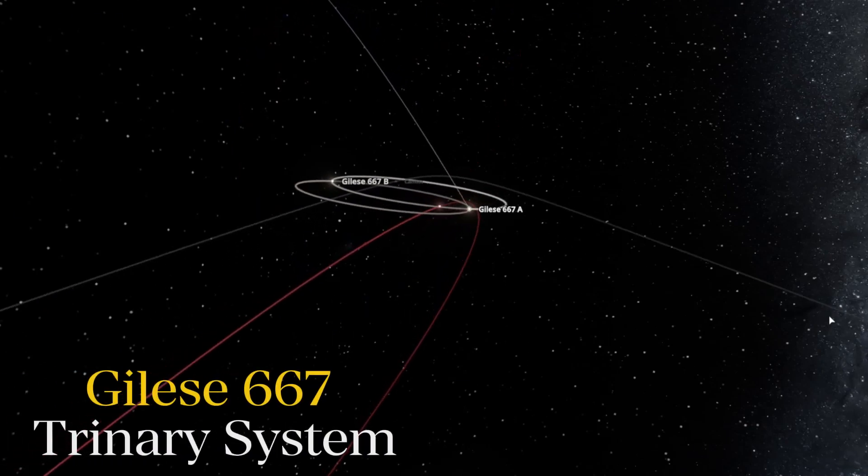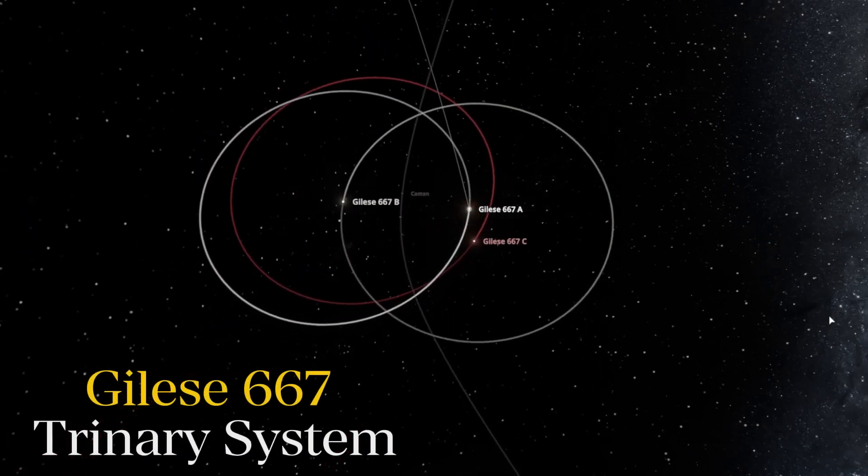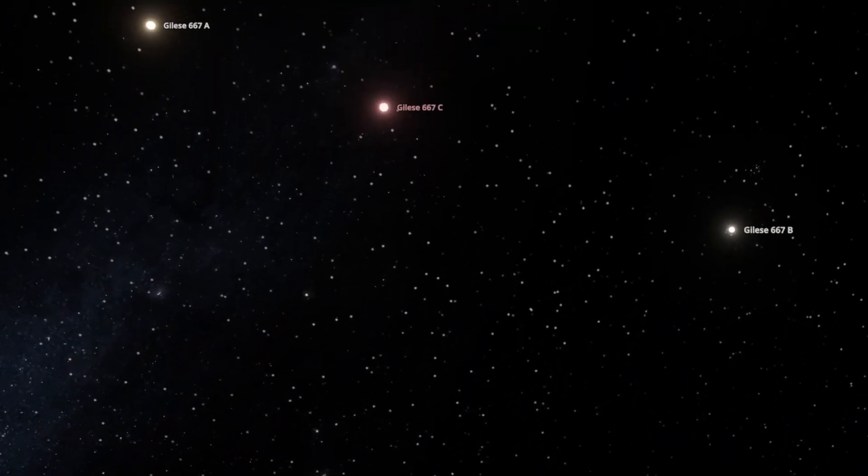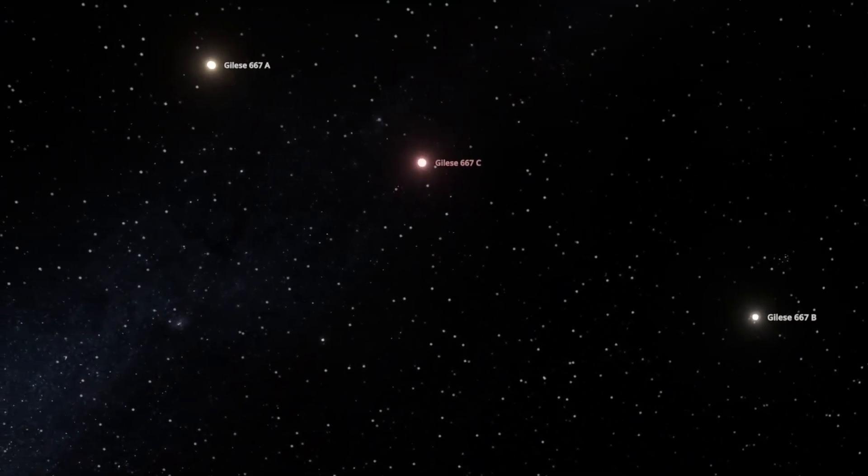Another interesting fact about this exoplanet is that it exists within a trinary star system. That's a system with three separate stars that all orbit one another. One thing is for sure, if this planet did have life, they would have some crazy views during the daytime. If it could ever be night time, you know I'm not really sure.